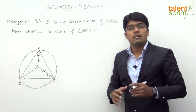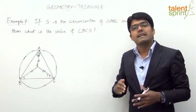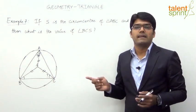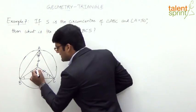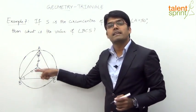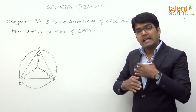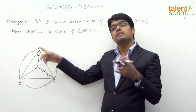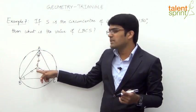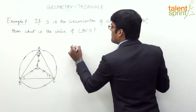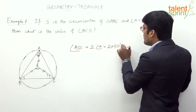Going by the key concept of circumcenter: the angle made by any side with the circumcenter is twice the vertical angle. If we consider side BC, the angle made by BC with the circumcenter is angle BSC. This angle is twice the vertical angle, which is angle A = 50 degrees. So angle BSC equals 2 times angle A, which is 2 × 50 = 100 degrees.